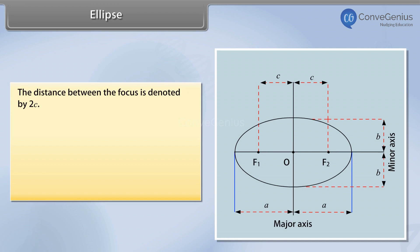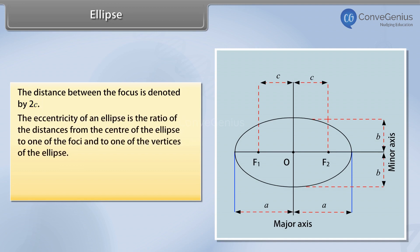The distance between the foci is denoted by 2c. The eccentricity of an ellipse is the ratio of the distances from the center of the ellipse to one of the foci and to one of the vertices of the ellipse. That is, E equals C upon A.